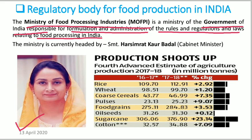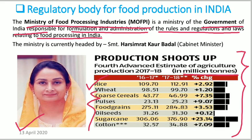This ministry is currently headed by Srimati Harsimrat Kaur Badal, the current cabinet minister. Do comment in the message section about who is the current state minister of this ministry. Here we have a chart of food production for the year 2017-18 in millions of tons, where we can see that rice is the foremost produced crop in India, followed by wheat and other crops.